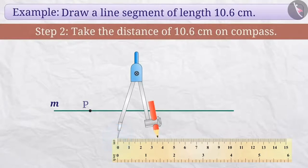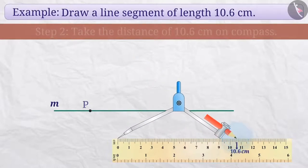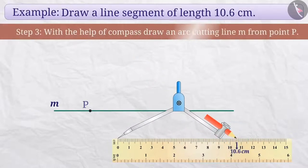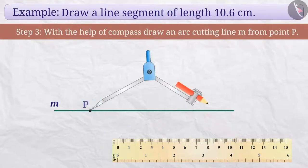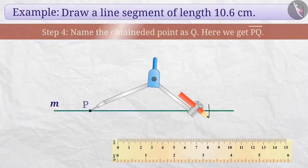Step 2: Now we will place the pointed end of the compass on 0 and stretch the compass so that the end with the pencil reaches the mark indicating a distance of 10.6 cm. Step 3: Now we will place the pointed end of the compass on point P and make an arc cutting the line M.